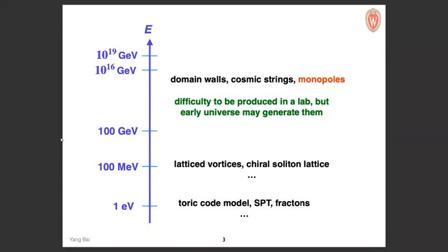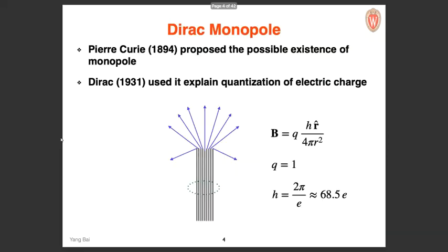The monopole is to some extent the simplest — it's more like a point-like object. Let me give a very simple history about the monopole, starting with Dirac. Even before Dirac there is Pierre Curie, who proposed the possible existence of a monopole. Dirac pointed out that if it exists, it may explain charge quantization.